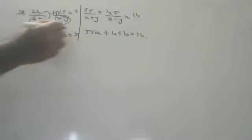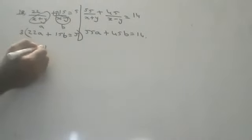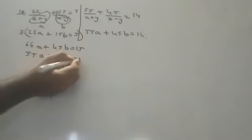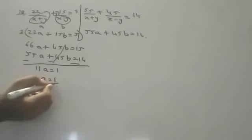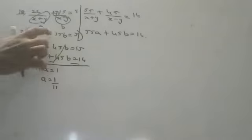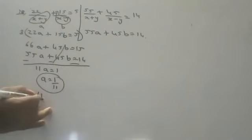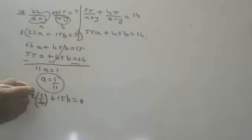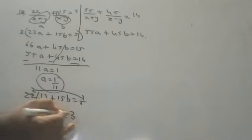To cancel b, multiply the first equation by 3: we get 66a + 45b = 15. Subtract the second equation (55a + 45b = 14): the 45b terms cancel, giving 11a = 1, so a = 1/11. Substitute a = 1/11 into 22a + 15b = 5: 22/11 + 15b = 5, so 2 + 15b = 5, giving 15b = 3 and b = 1/5.